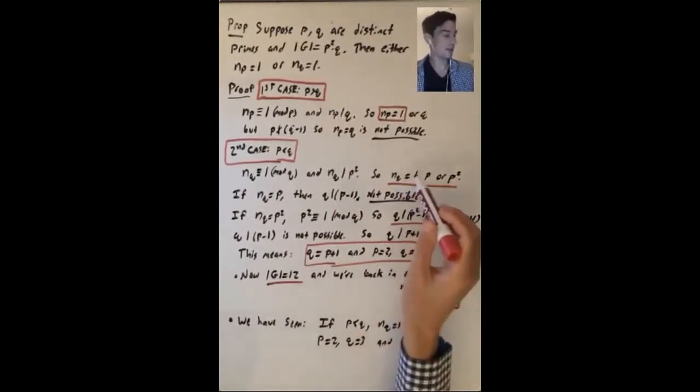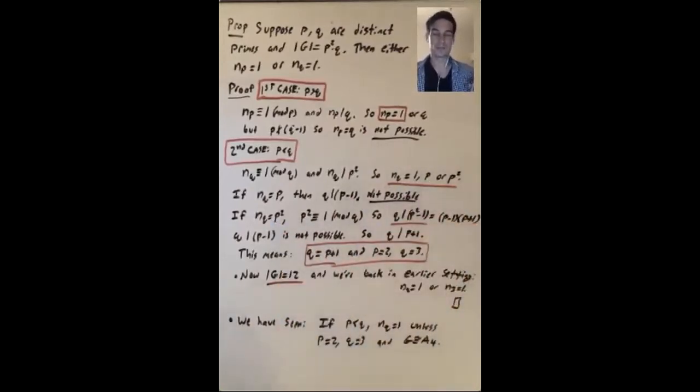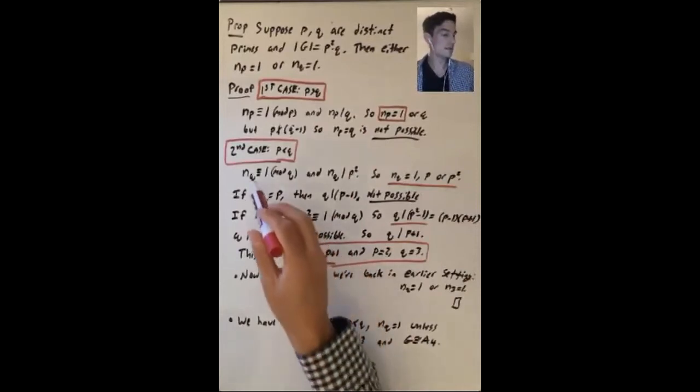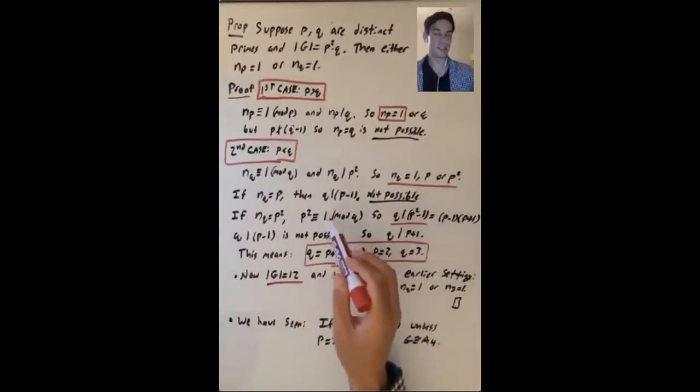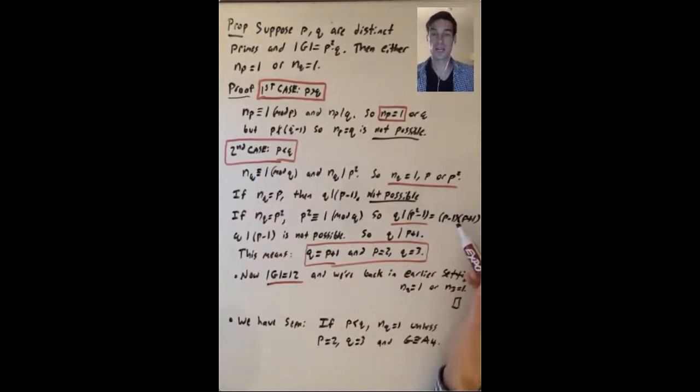So if nq is not equal to 1, it has to be equal to p squared. And that means p squared is congruent to 1 mod q. So q divides p squared minus 1.